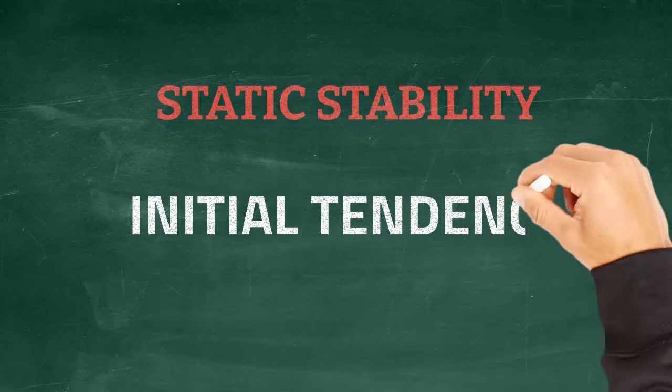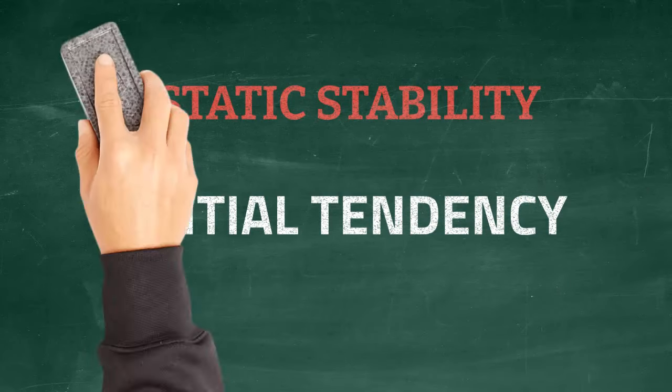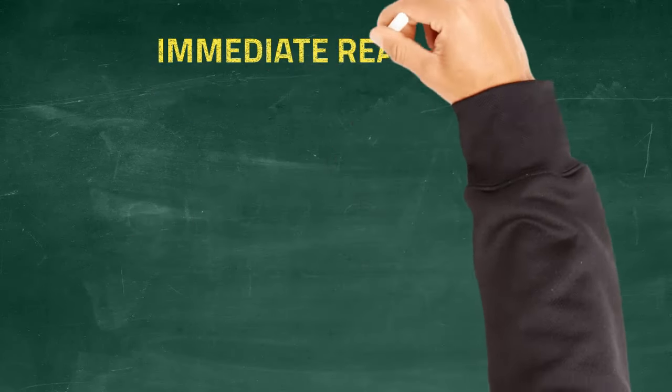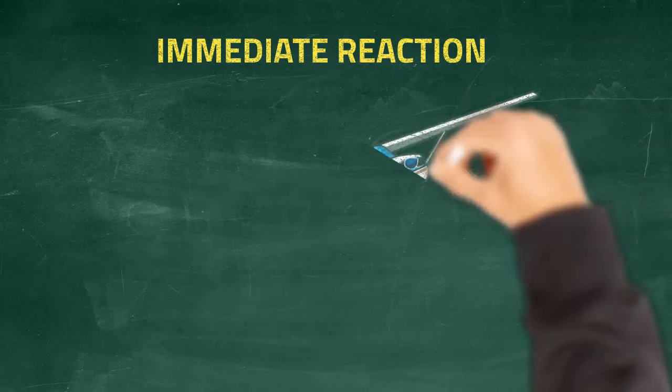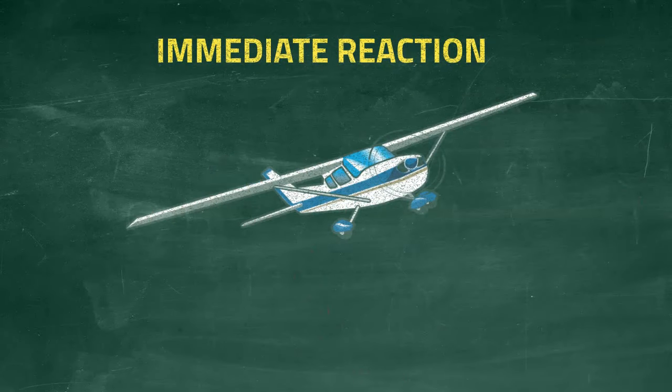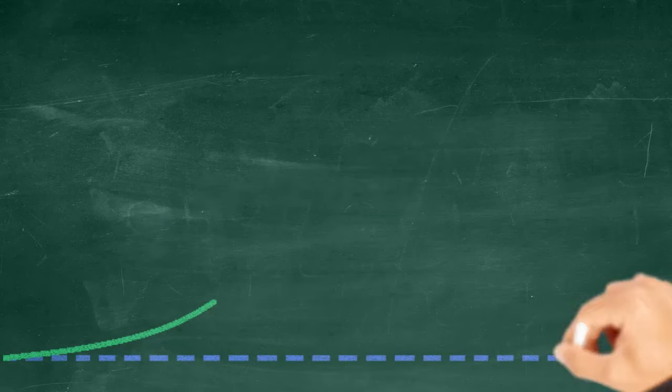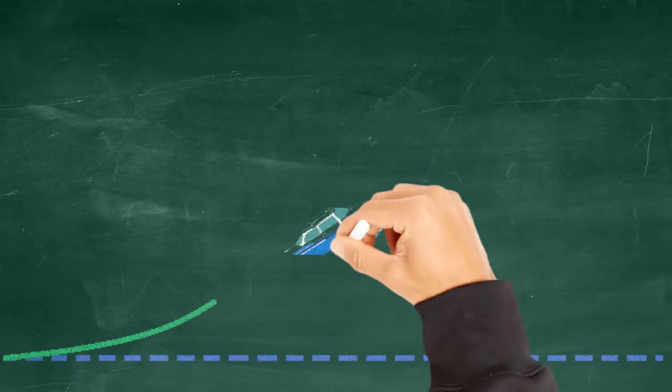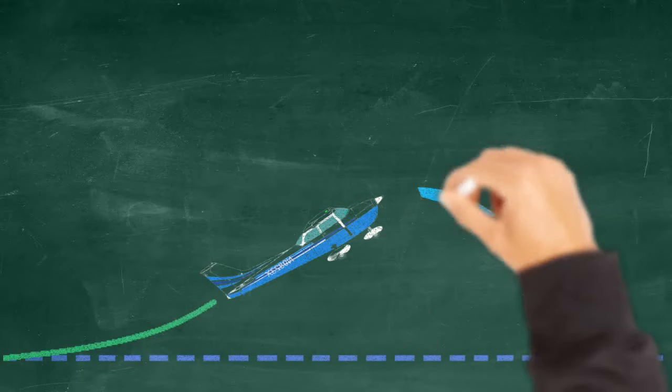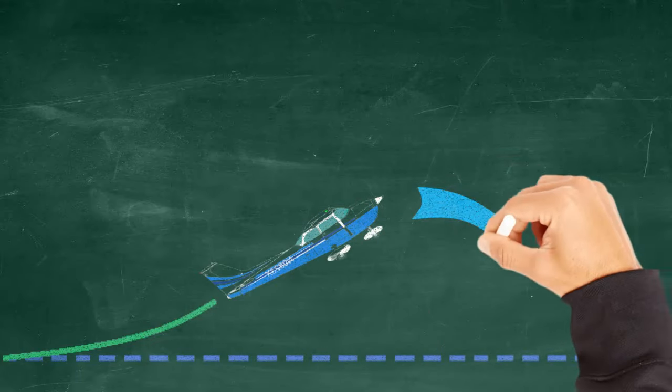Static stability is the initial tendency of the aircraft after the equilibrium is disturbed. In other words, what's your airplane's immediate reaction after you make a control input or one of the three axes are changed by some outside force? Let's say, for example, you pitch your airplane up five degrees. What's the initial tendency of your airplane? If it's to pitch back down to its original attitude, this would be known as positive static stability.